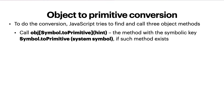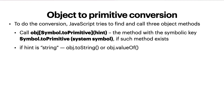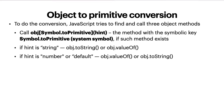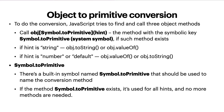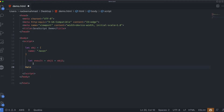To do the conversion, JavaScript tries to find and call three object methods. It calls an object with Symbol.toPrimitive taking a hint — Symbol.toPrimitive is a built-in system symbol used to name the conversion method. If such a method exists, it is used for all hints and no more methods are needed. There's a built-in symbol named Symbol.toPrimitive that should be used to name the conversion method — if it exists, it handles all hints.